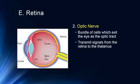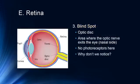The optic nerve is a bundle of cells that exits the eye as the optic tract, transmitting signals from the retina to the thalamus — specifically to the lateral geniculate nucleus. This exit point is called the optic disc, which is the bright spot visible in retinal images. There are no photoreceptors in this area, so it is our blind spot. The blind spot is on the nasal side of each eye, closest to your nose. We don't notice it because the matching visual field in our other eye compensates, and the brain fills in the surrounding area.